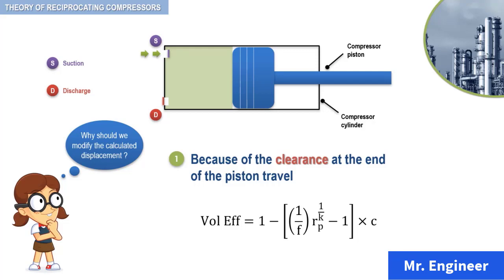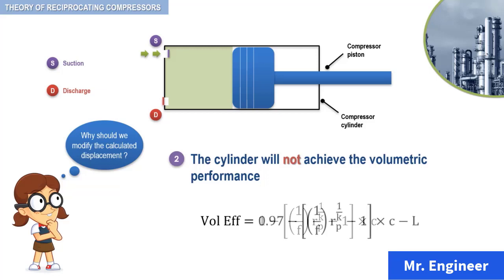The second reason for modification of the displaced volume is that in real-world applications, the cylinder will not achieve the volumetric performance predicted by this equation. Therefore, it is modified to include empirical data. This new equation is the one recommended by the compressed air and gas institute, but it is somewhat arbitrary as there is no universal equation.